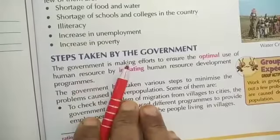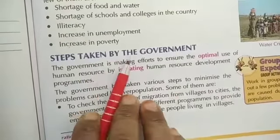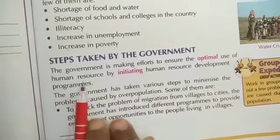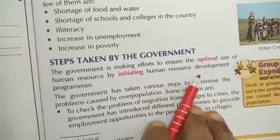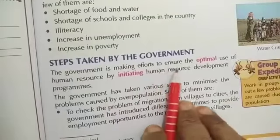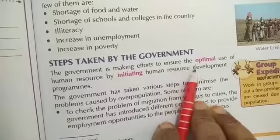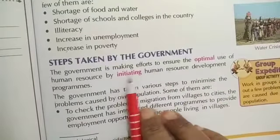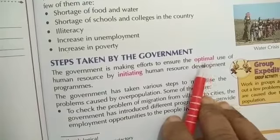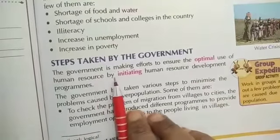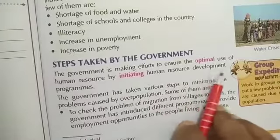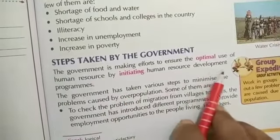Steps taken by the government: The government is making efforts to ensure the optimal use of human resource by initiating human resource development programs. Sarkar prayas kar rahi hai optimal use of human resource — best use — kaise kar sakte hain. Optimal means best use or most satisfactory use. Unhone human resource development program shuru kiya hai.